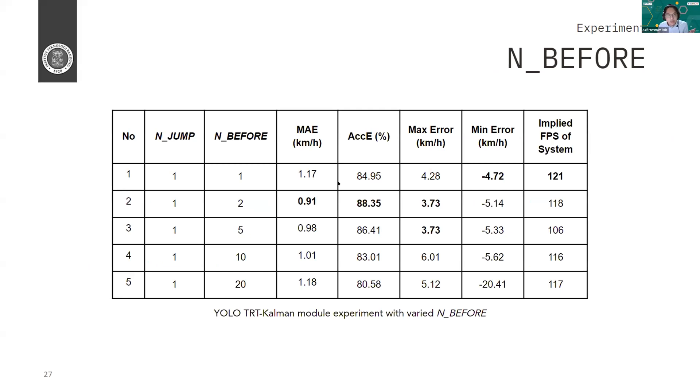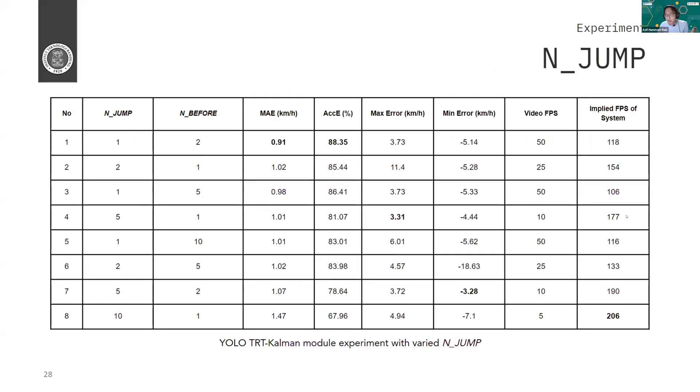Okay, then we use varied frame skipping parameters also. We found that if we use n_jump equals to 5, meaning we skip four frames, we still have good MAE of 1.01 kilometer per hour and acceptable error interval of 81%. So it's actually still pretty good. So basically meaning that even if you use the video FPS as 10 FPS, then we have an implied FPS of the system as 177, like 70% faster than if we don't use any n_jump, it will still yield a pretty good result.